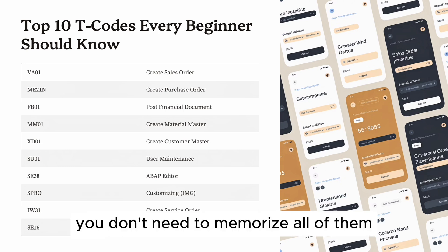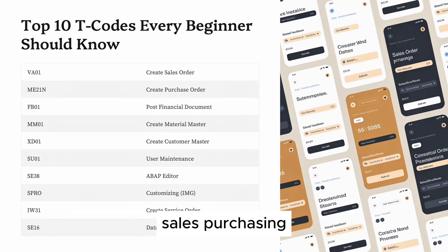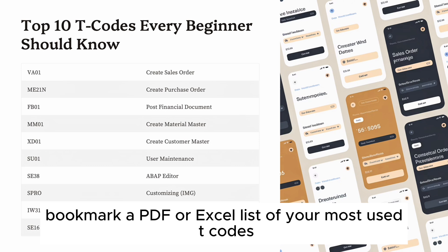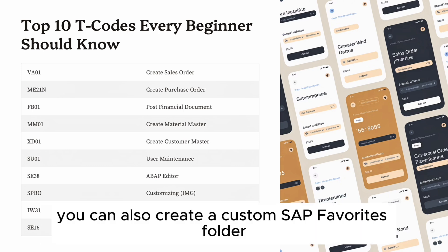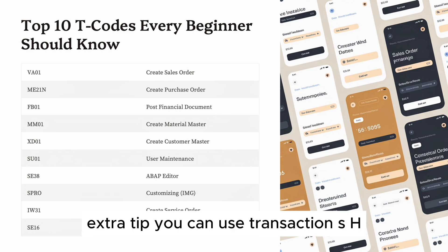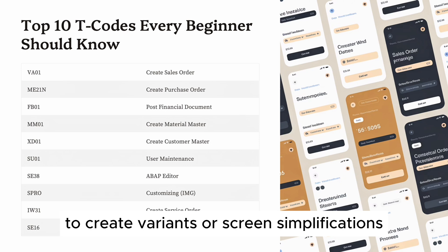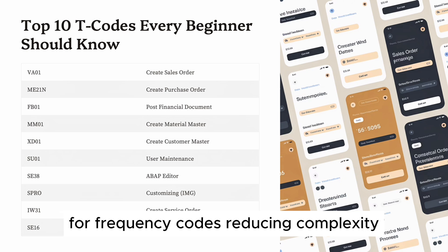You don't need to memorize all of them — just start with 3 to 4 based on your role: Sales, Purchasing, or Technical. Bookmark a PDF or Excel list of your most used T codes, and create a custom SAP favorites folder for instant access. You can also use transaction SHD0 to create screen simplifications for frequent T codes, reducing complexity.